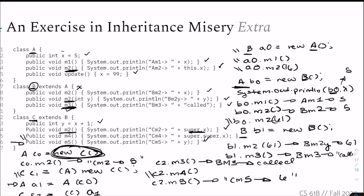Then '(C) c0.M3()' — we're going to cast c0 to be a C. C0 has static type A, and C is a subclass of A, so the cast is valid. We check the C class for M3 — not there, but B has it. Passes the compile check. At runtime, we evaluate the function from B and get 'B M3 called'.